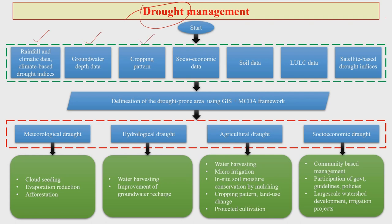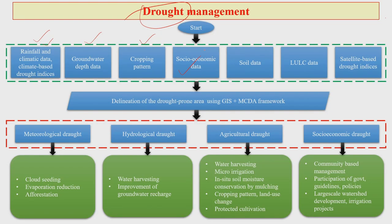The drought management system is based on your rainfall data, climatic data, climate-based different drought indices, groundwater depth data, cropping pattern, socioeconomic data — which is very important — household level information, soil data, land use and land classification data, and satellite-based drought indices.